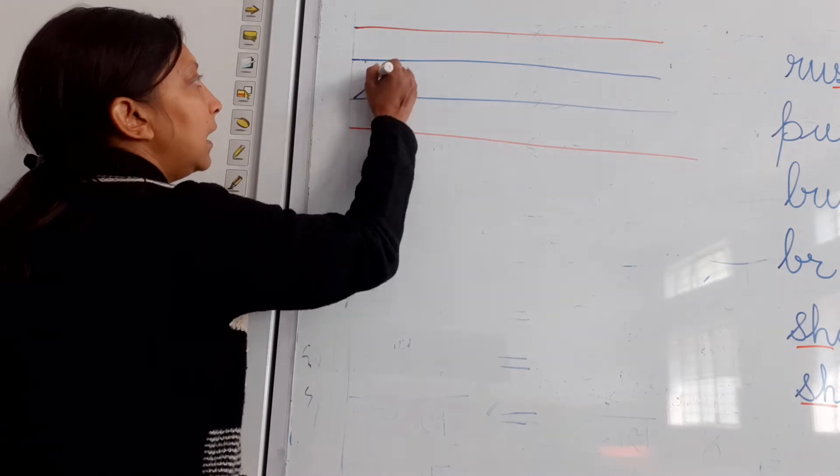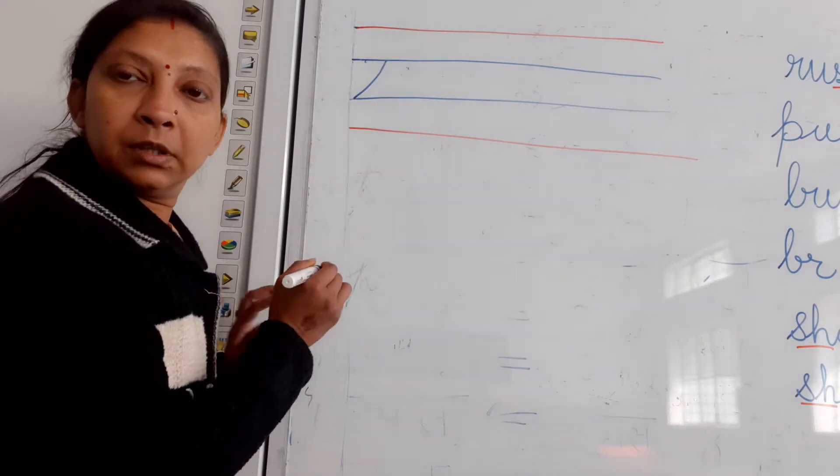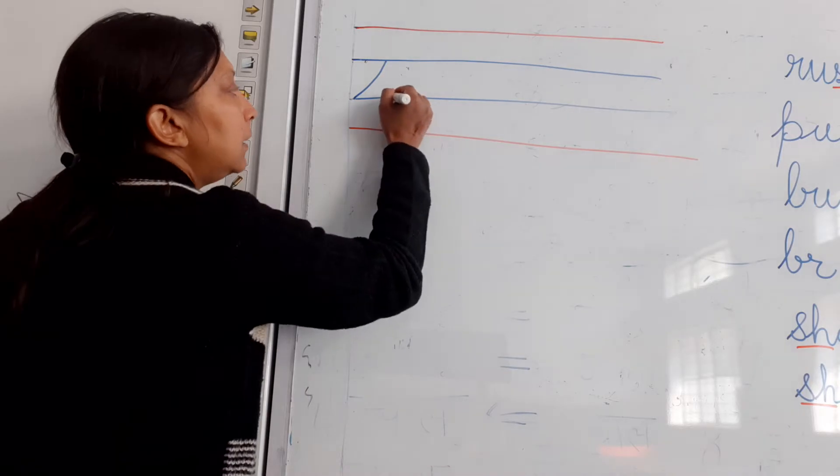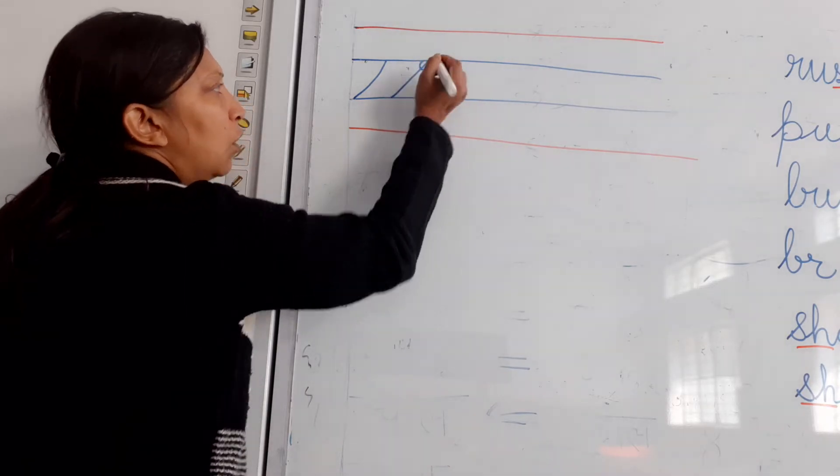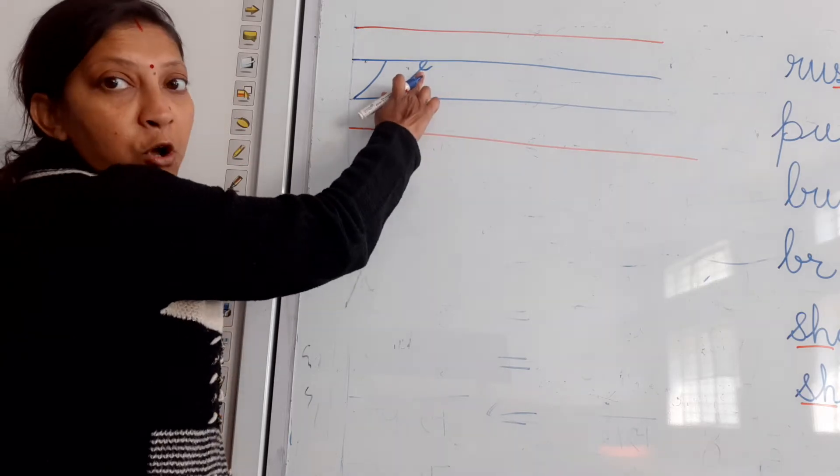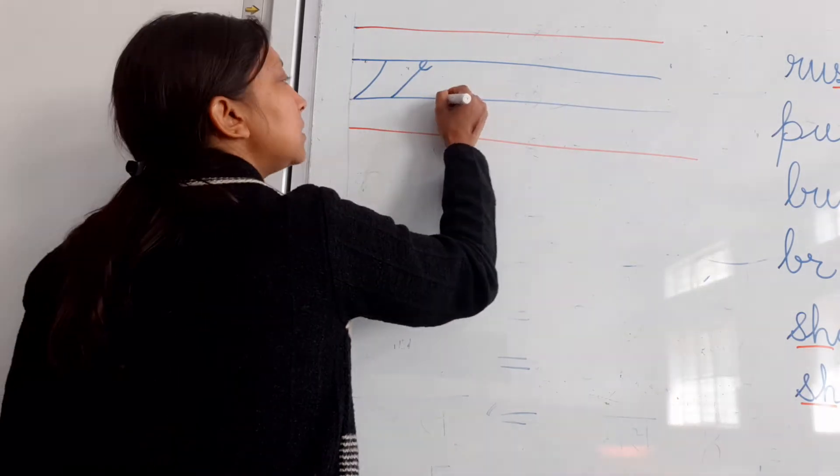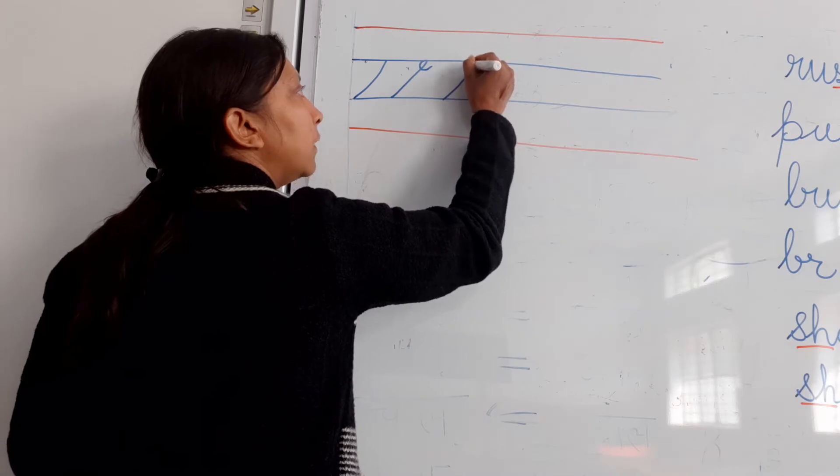Make one sliding line, neeche se upar. Can you see that? Neeche se upar, neeche se. And then take a small circle, so you can make a small circle. This is a small circle, neeche se upar sliding line, small circle.